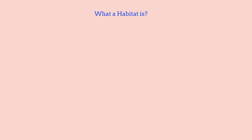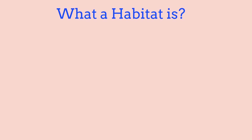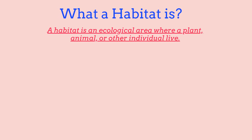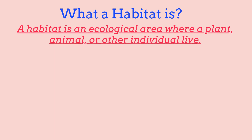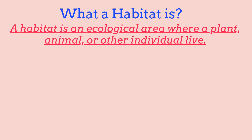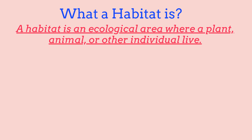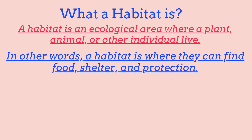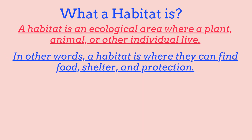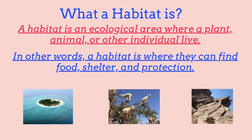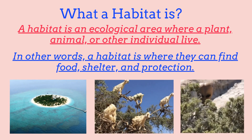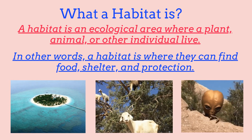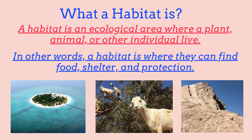A habitat is basically an ecological area where a plant, animal, or other organisms live. A habitat can also be where organisms can find food, shelter, and protection. Some examples of habitats may be islands, trees, rocks, jungles, and forests.